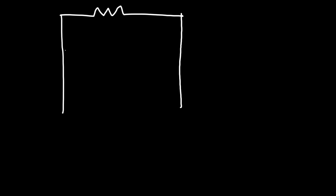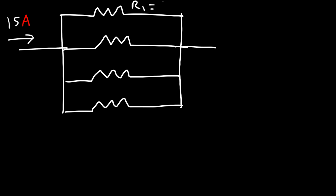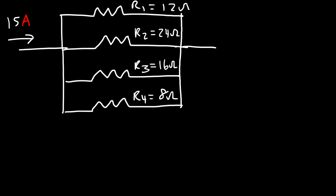Now let's consider a circuit with four resistors in parallel. The total current entering the circuit is 15 amps. R1 is 12 ohms, R2 is 24 ohms, R3 is 16 ohms, and R4 is 8 ohms. Calculate the current flowing through every branch of this parallel circuit.